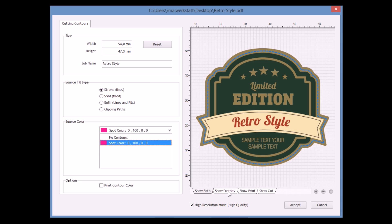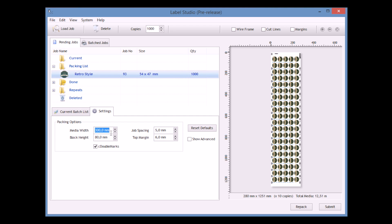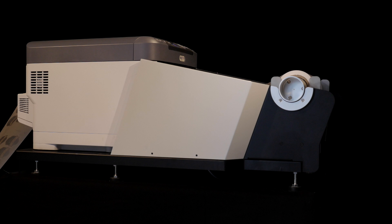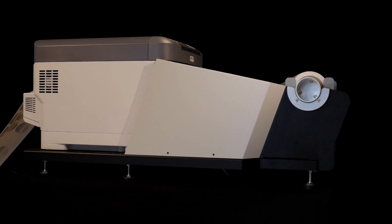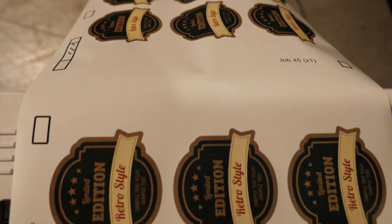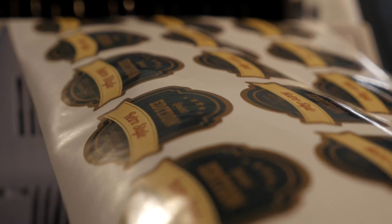A corresponding print and cut file featuring the necessary crop marks is created in DrawCut Label Studio. A suitable printing system, in this case a laser roll printer, is used to print the desired number of labels with DrawCut's crop marks.